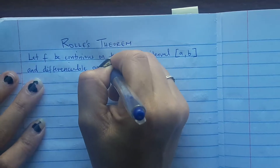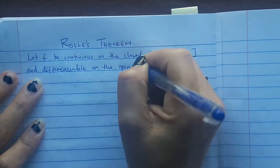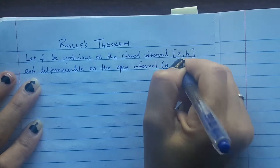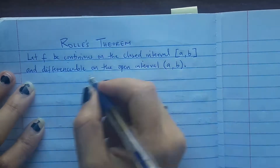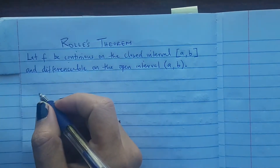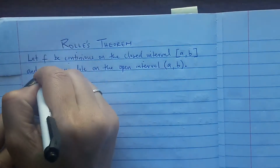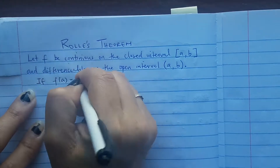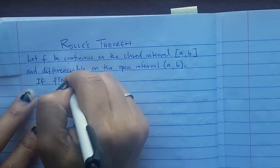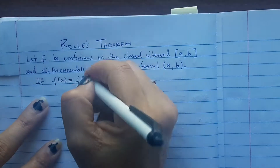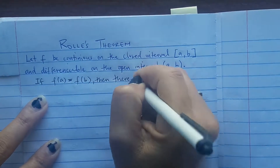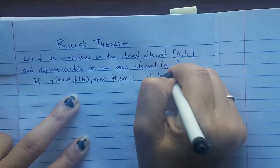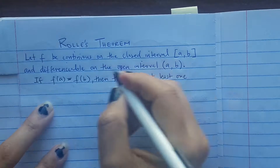Underline the words continuous and differentiable. And also the third condition: if f of a is equal to f of b, then there's at least one number c in that open interval such that the derivative is equal to zero.